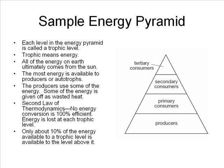Each level in an energy pyramid is referred to as a trophic level — trophic means energy. An important rule to remember when talking about energy pyramids and trophic levels is the rule of 10. This rule states that only about 10% of the energy available to a particular trophic level is available to the organisms in the level above. For example, if 10,000 joules of energy were available to the producers, only about 1,000 joules would be available to the primary consumers, only about 100 joules to the secondary consumers, and only about 10 joules to the tertiary consumers.